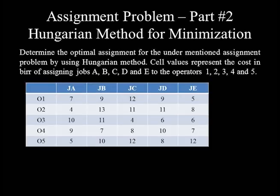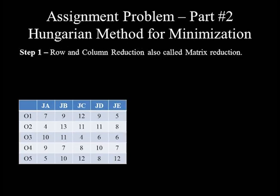Cell values represent the cost of assigning jobs A, B, C, D, and E to operators 1, 2, 3, 4, and 5. Let's directly dive into the steps of the Hungarian method. Step 1: row and column reduction, also called matrix reduction.